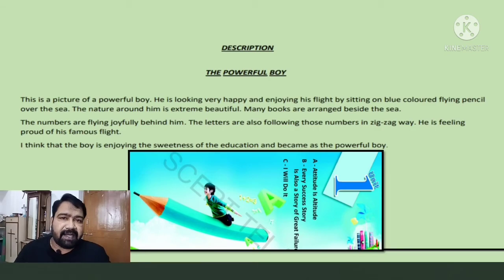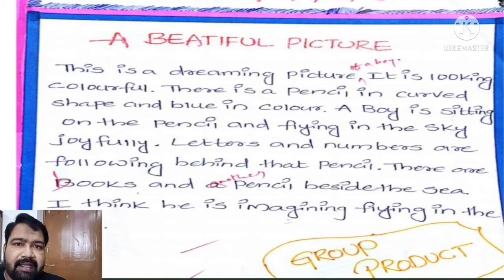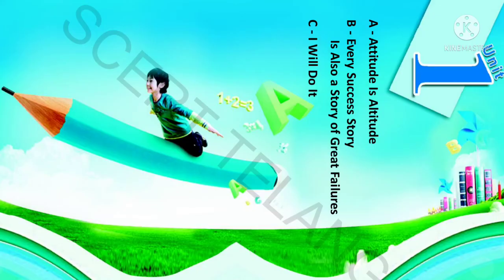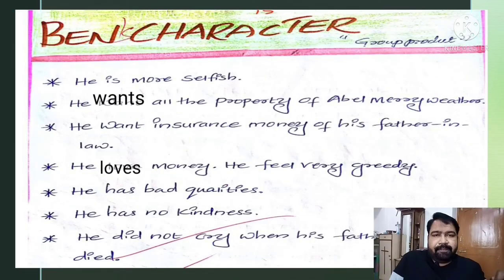Now let us see some sample descriptions written by my students. Here is one: 'A Beautiful Picture. This is a dreaming picture of a boy. It is looking colorful. There is a pencil in curved shape, blue in color. A boy is sitting on the pencil and flying in the sky joyfully. Letters and numbers are falling behind the pencil. There are books and another pencil beside the sea. I think he is imagining flying in the sky.'